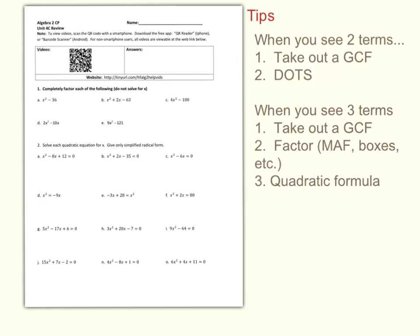When you see three terms, take out a GCF, then factor using MAF, boxes, etc., or use the quadratic formula. So different things that you need to consider depending upon the number of terms that you see.